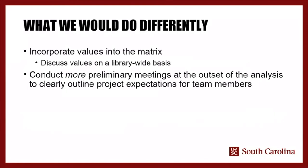One thing I would definitely do differently is work harder to incorporate values into the matrix. This absolutely falls within the framework of MCA, but in our brainstorming sessions we tended to focus a lot on features, which is very important — but values also matter in the decision we'll ultimately come to. Anything we pick is going to reflect our values to the people who use our collections. It did end up being part of the conversation, but I wish I had driven the initial brainstorming sessions more in that direction.